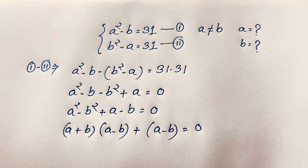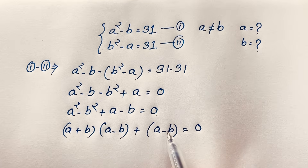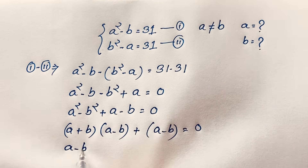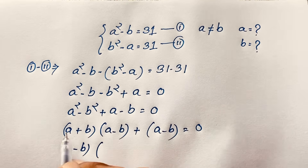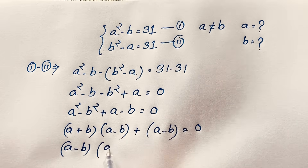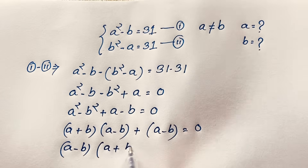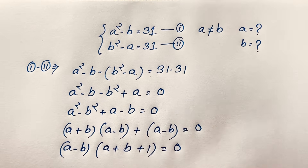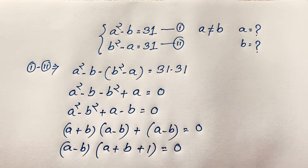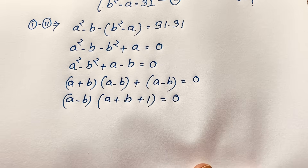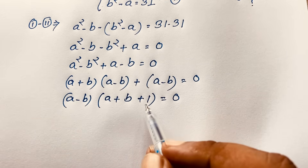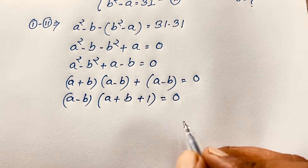Now in this expression you can see this is A minus B and this is A minus B, so A minus B is common. If I take A minus B as common, it will be A plus B, and these divide to give plus 1 equals 0. So we find two cases: first case A minus B equals 0, second case A plus B plus 1 equals 0.